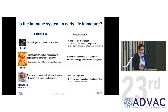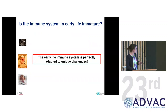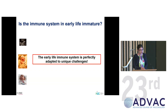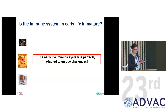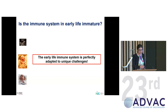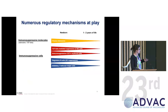The early life immune system is not immature; it is different, because it is perfectly adapted to all the challenges it will meet in a very short period of time — days or weeks. With this as a ground base, I'd like to show you just some of these regulatory mechanisms and how things change — not for you to memorize, but just to appreciate how complex the early-life immune system is.